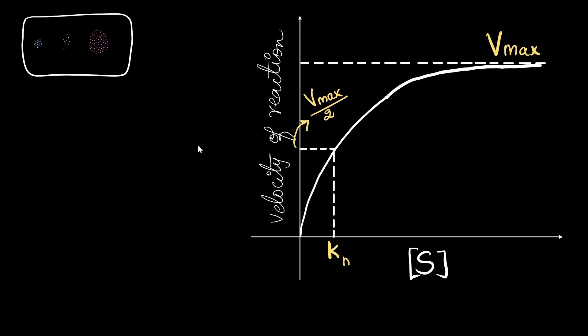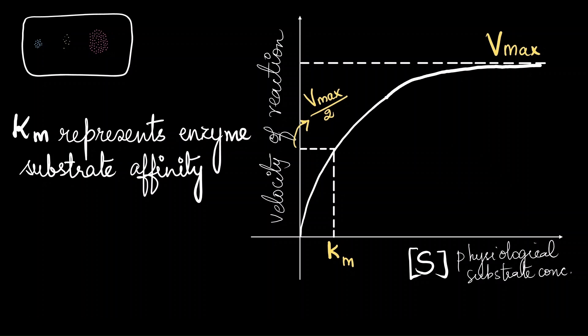This can be used to find a constant which is called as Km. Km is important because it represents the physiological substrate concentration. What it means is that in a cell, that would be the concentration of a certain substrate realistically.